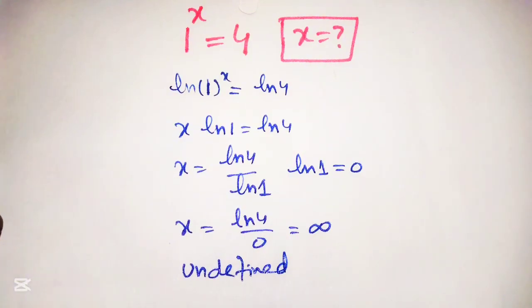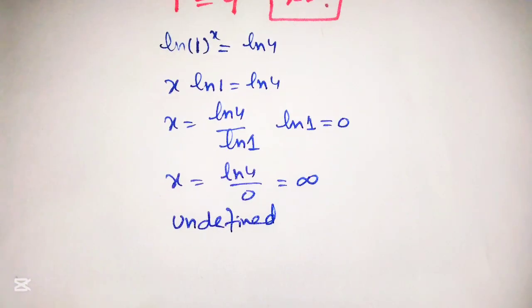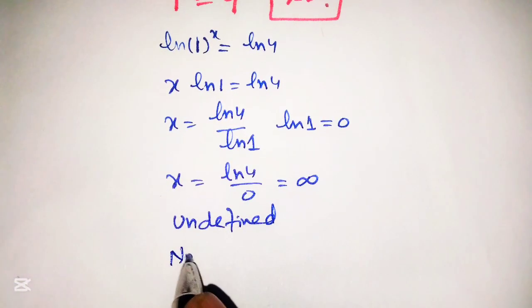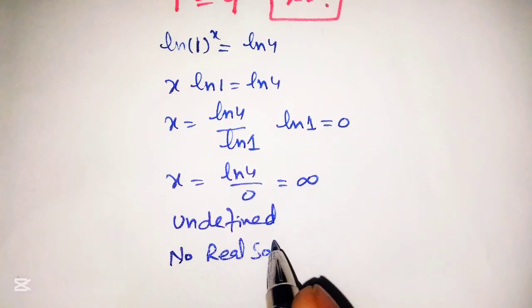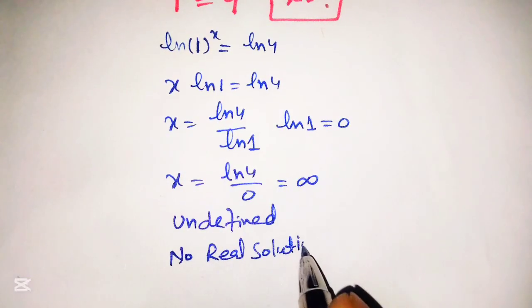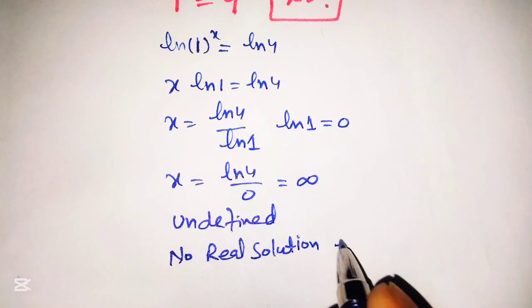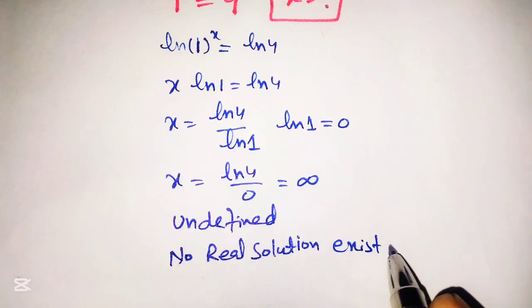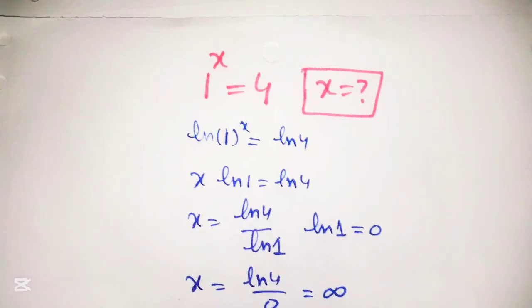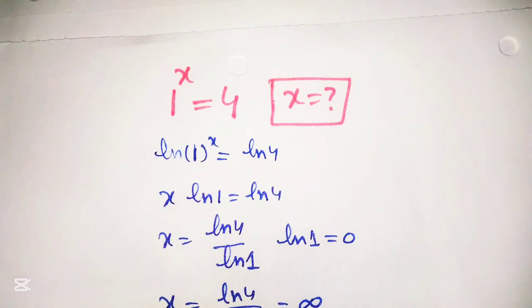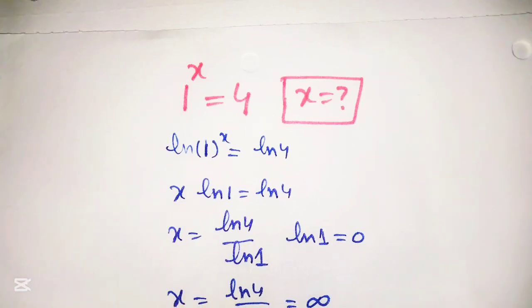From this we can conclude that no real solution exists. Now if there is no real solution, there must be a complex solution. How can we calculate the complex solution of this given equation?